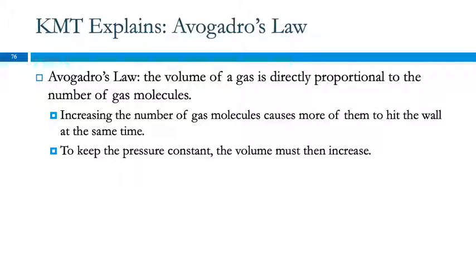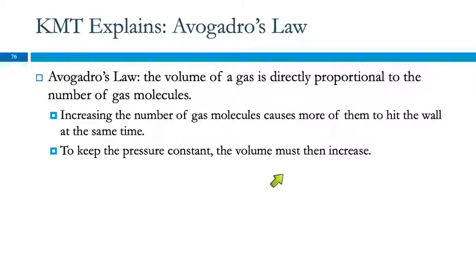Avogadro's law says the volume of the gas is directly proportional to the number of gas molecules. If we increase the number of gas molecules in a sample, there are more molecules hitting the sides more frequently, so the pressure would increase. Avogadro's law is at constant pressure, so to maintain constant pressure we have to increase the volume.